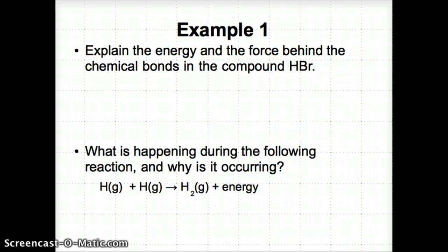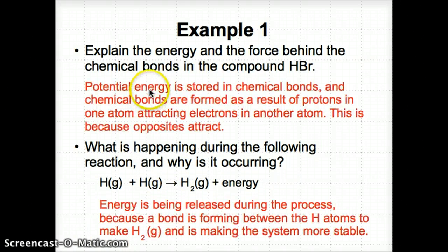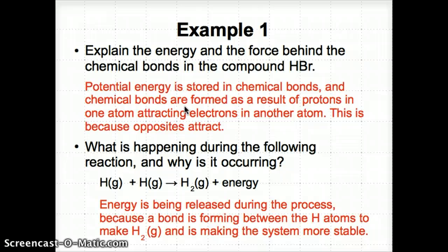Now let's try two examples. Example one: the first question asks us to explain the energy and force behind chemical bonds in HBr. Applying what we know — potential energy is stored in bonds, and bonds form when protons in one atom are attracted to electrons in another atom. This is because opposites attract: protons are positive and electrons are negative.